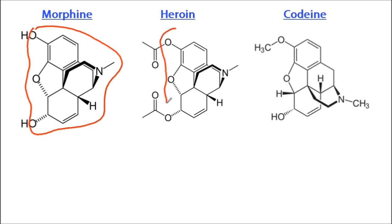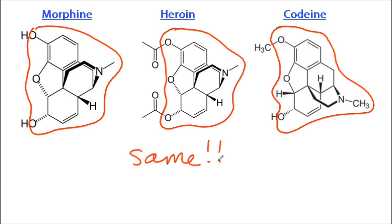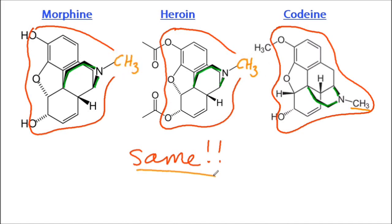I'm going around in red to show the identical part of these three molecules. You might think that you've found differences — for example, that nitrogen there looks different. But it isn't; it's just drawn in a different way. That's the same sort of nitrogen. And that methyl group on heroin — there is something there. This is the skeletal structure, and if there's a line that just ends like that, that's assumed to be methyl. So that part is the same for all the molecules.